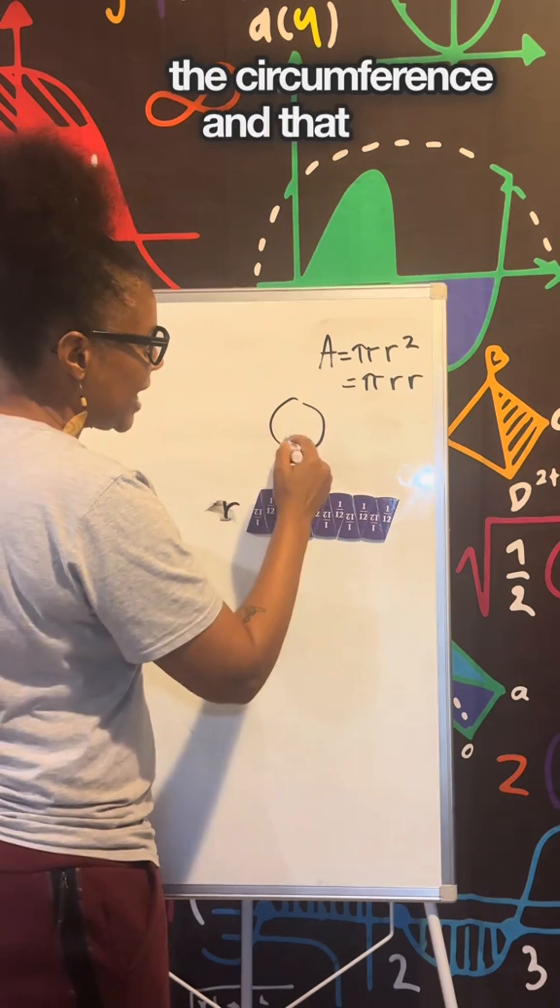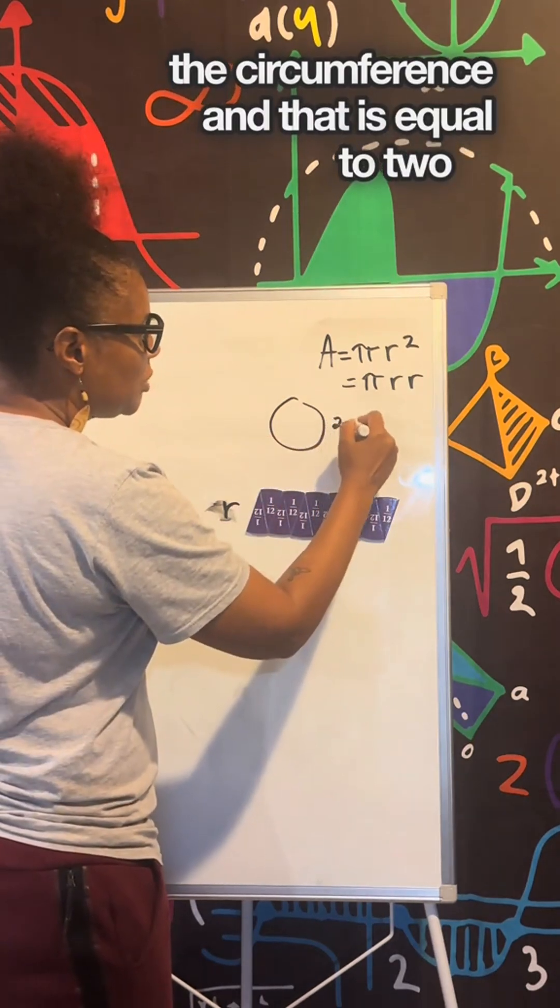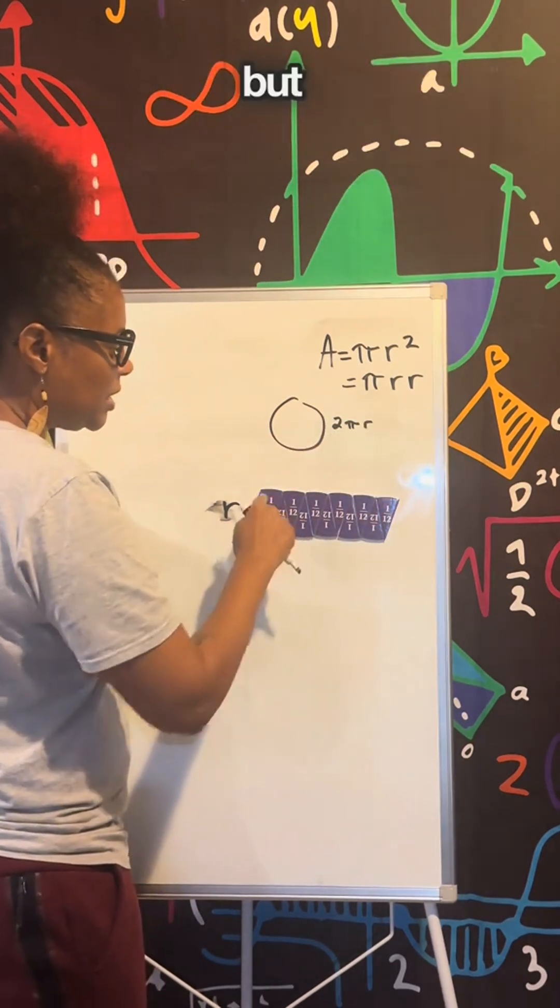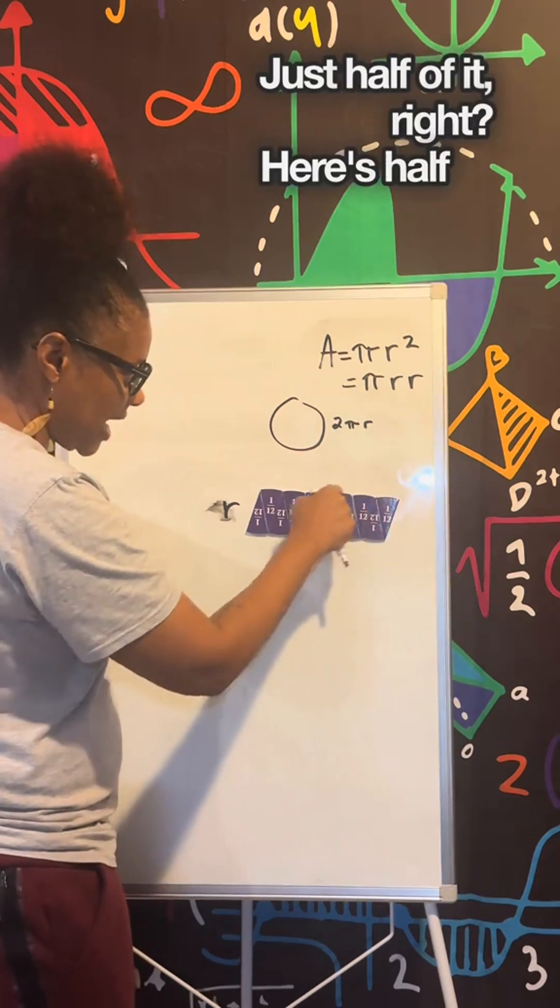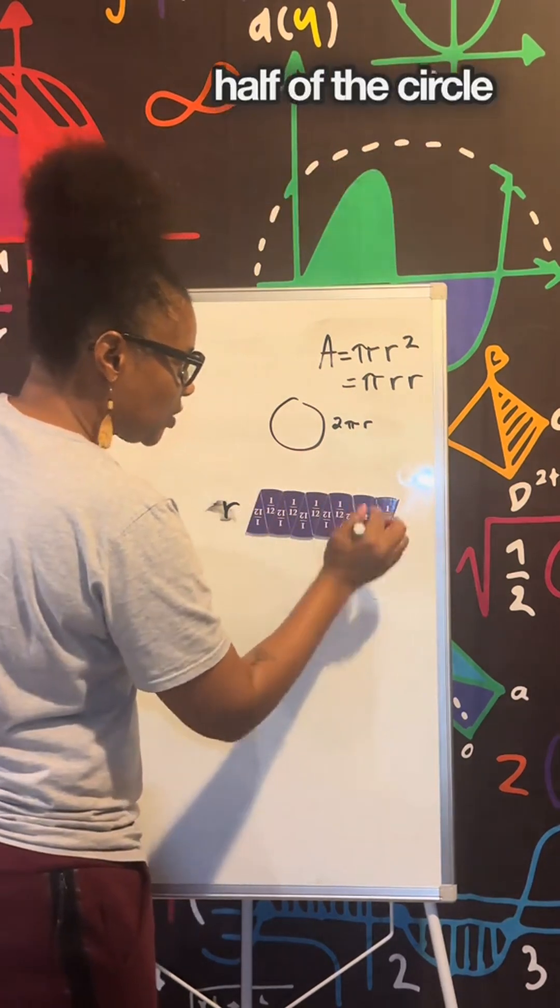Now the distance around a circle is what we call the circumference, and that is equal to 2πr. But notice this top part will represent what, just half of it, right? Here is half of the circle, here half of the circle here.